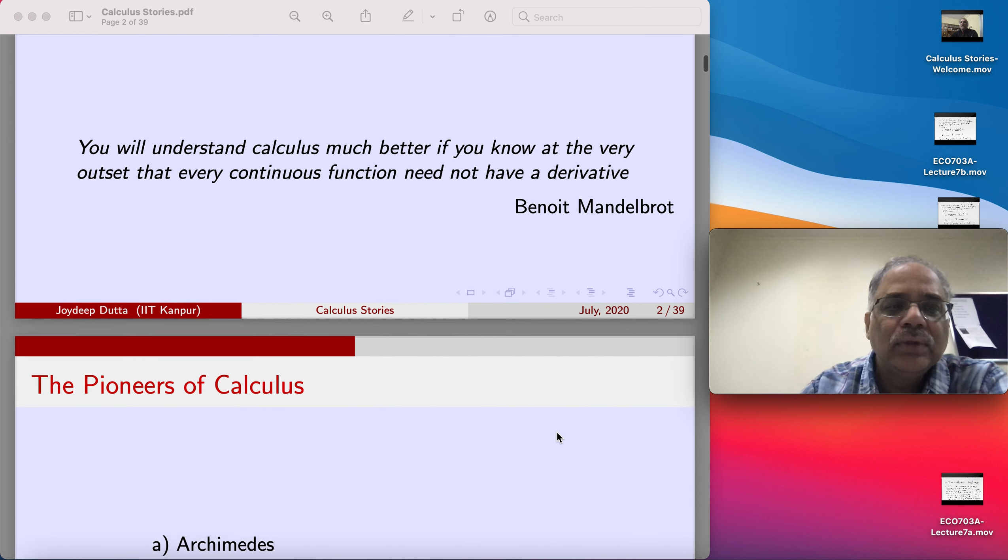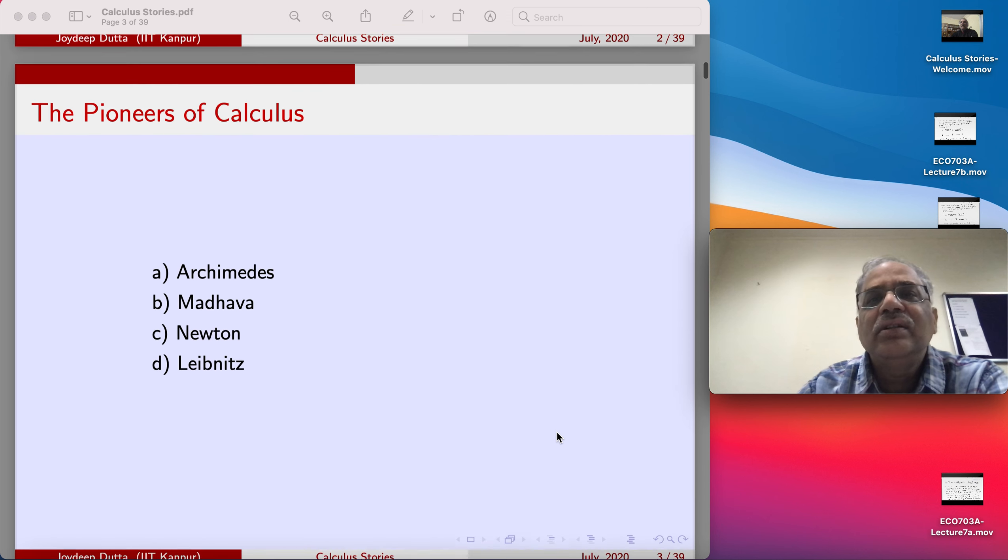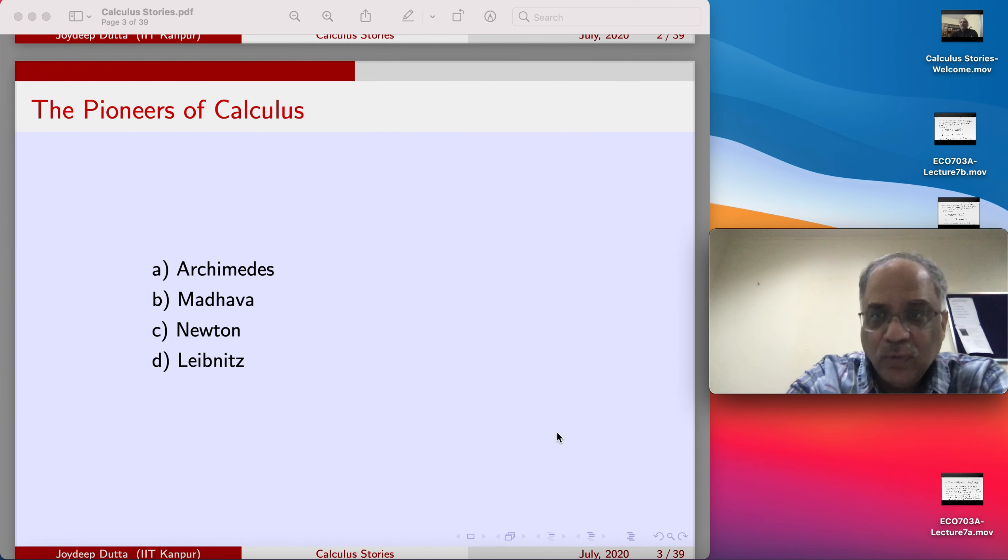So who are the pioneers of calculus? One of them is Archimedes. If you look at the book of Apostol, volume one and volume two, he starts with integration and ends with differentiation, in the sense that the idea on which the notion of integration is based is exactly the way Archimedes calculated the area of the circle. So in that way, Archimedes discovered integral calculus, and later on Newton and Leibniz discovered differential calculus.